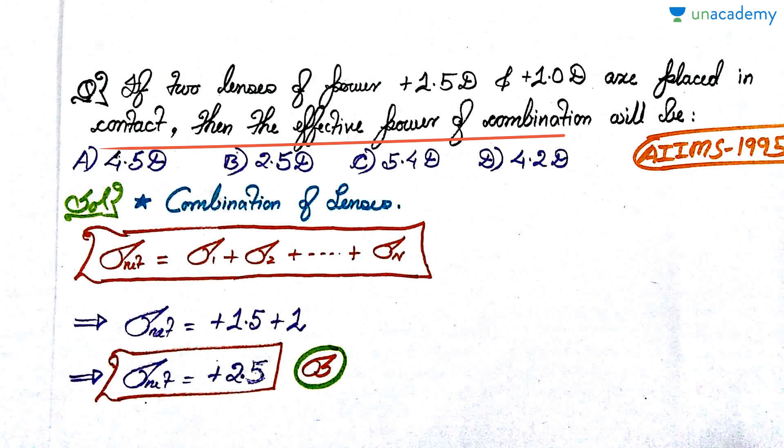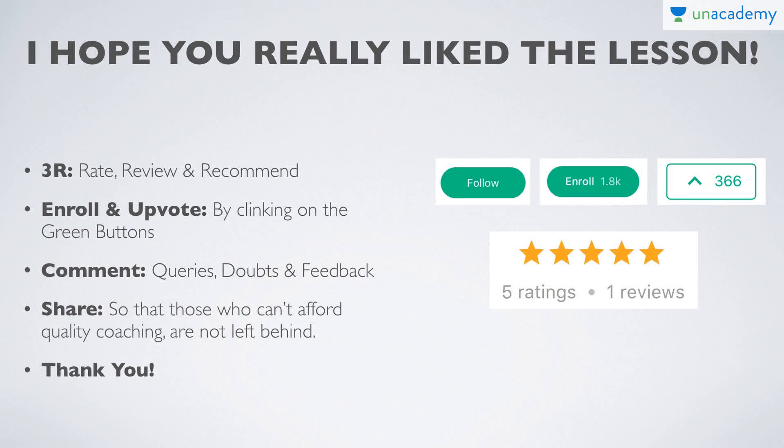I hope you have attempted the question. It's a really simple question. We have known this formula which you have to use: combination of lenses. The only concept you need to know is that the net power is addition of individual power. Simply write down the formula: net power is addition of individual power. Now add up the individual power; the net power is simply equal to 2.5 diopters. 2.5 diopters is option B, so that is your correct answer.